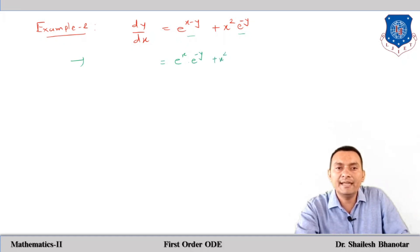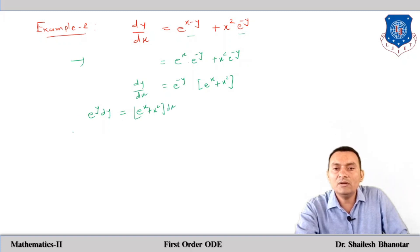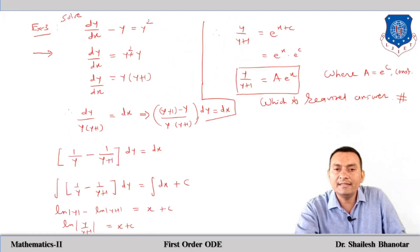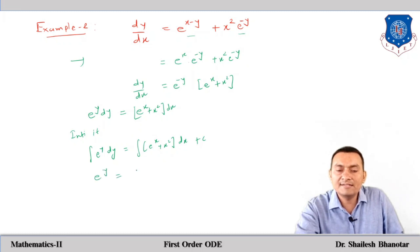Taking e^(−y) common, we get dy/dx = e^(−y)·(e^x + x²). Moving e^(−y) to the left, we have e^y dy = (e^x + x²)dx. Integrating both sides: ∫e^y dy = ∫(e^x + x²)dx + C, giving e^y = e^x + x³/3 + C. This is the general solution.